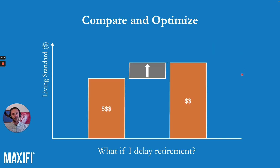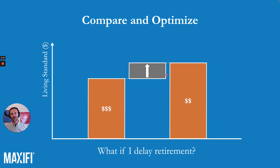Another very powerful thing about Maxify is that we can compare different scenarios — referred to as profiles in Maxify — by comparing the highest affordable living standard. For example, a very common question is: what if I delay retirement by one, two, three, four, or five years? What if I downsize my home in retirement? Maxify can not only solve for your highest affordable living standard, but can calculate the difference between the two — quantifying the financial impact of some of the biggest decisions you may face, such as when to retire, whether to downsize your home in retirement, and what the financial impacts of doing so are.